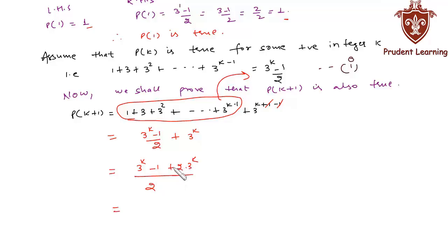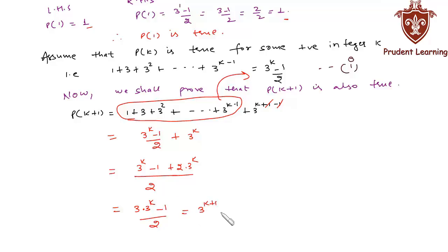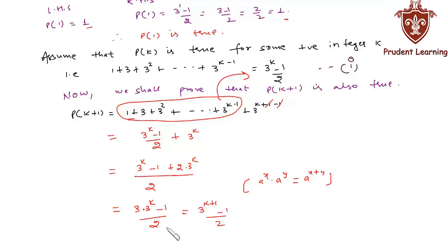Taking 2 as LCM, we get (3^k − 1 + 2 × 3^k) / 2. In the numerator, 3^k + 2 × 3^k = 3 × 3^k, so we have (3 × 3^k − 1) / 2, which equals (3^(k+1) − 1) / 2, since a^x × a^y = a^(x+y). Thus this condition is true for n = k+1.